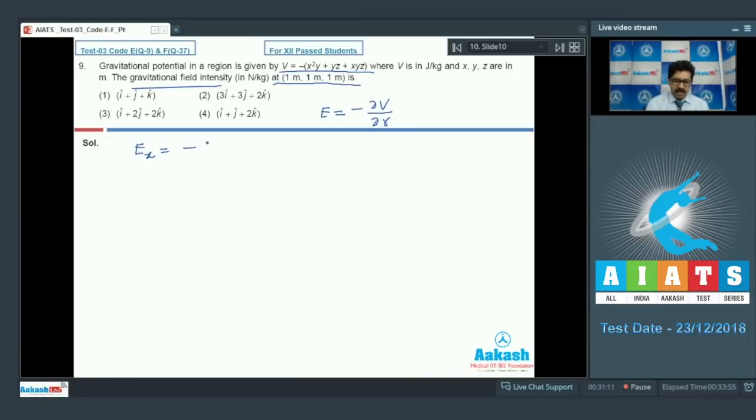E equals minus del v upon del r. For the x component, Ex equals minus del v upon del x. Partial differentiation means with respect to x, only x is variable, yz are constants. So differentiating minus x squared y gives minus 2xy, yz term gives zero, and xyz gives yz. This becomes minus of minus 2xy minus yz. Putting values x=1, y=1, z=1, this gives plus 3.